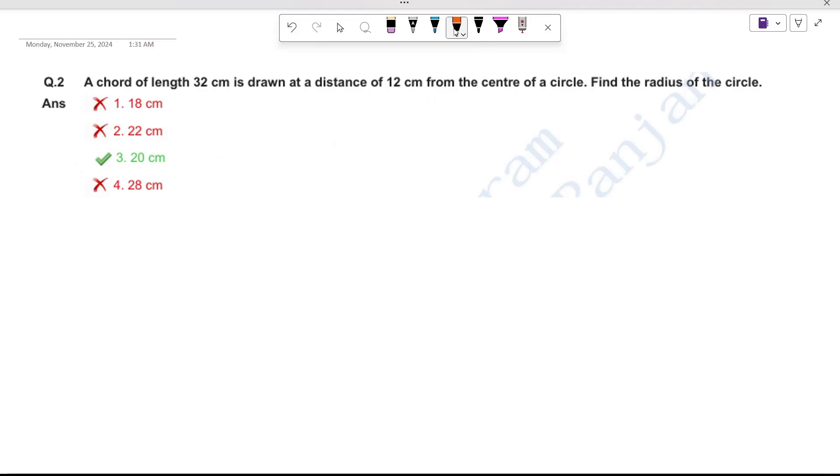Now let's solve this question. This is from SSC CGL. A chord of length 32 cm is drawn at a distance of 12 cm from the center. Find the radius of the circle.